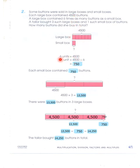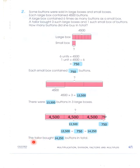To recap: 6 units equal 4,500, so 1 unit is 4,500 divided by 6, which equals 750. Each small box contained 750 buttons. Each large box contained 4,500 buttons, so 3 large boxes equal 13,500. Adding 1 small box: 13,500 plus 750 equals 14,250. The tailor bought 14,250 buttons in total. I hope you've understood. Wish you good luck — Allah Hafiz.